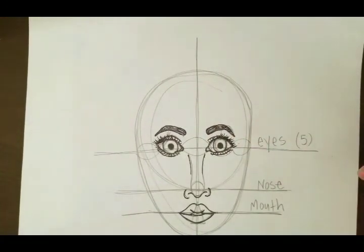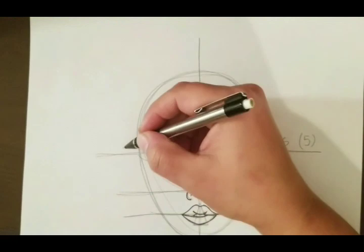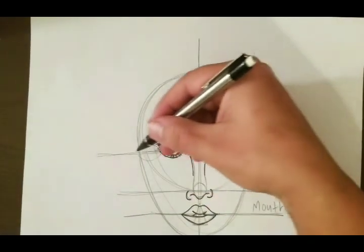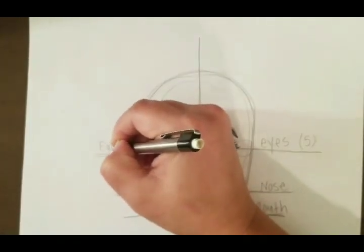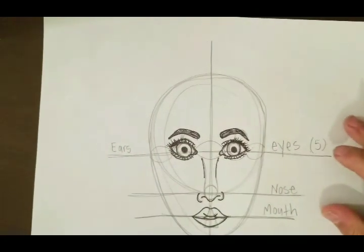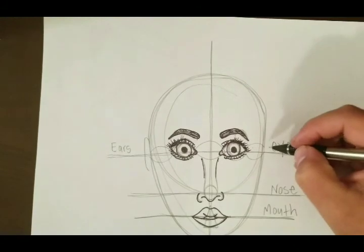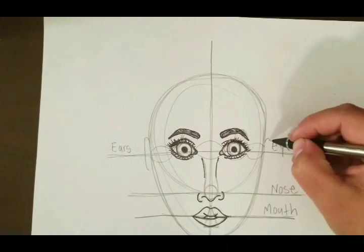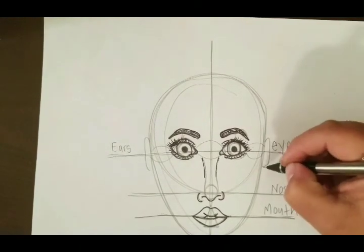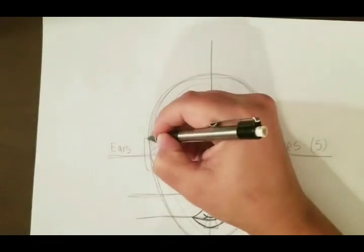Now we're going to work with this top portion here. This top half, this line along with the eyes, that's also going to be for your ears, believe it or not. We're going to draw an ear on either side. It's basically just like the letter C, a little oval.